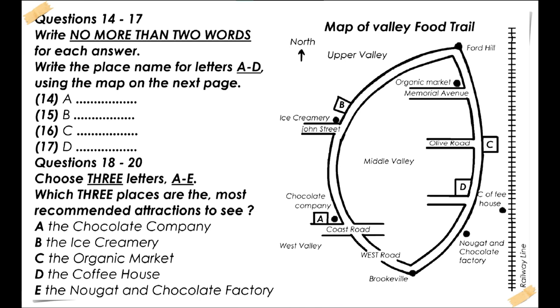Before the final part of the message, you now have twenty seconds to look at questions fourteen to twenty. Now answer questions fourteen to twenty. But let's go back to food. If we begin in Brookville and head north towards Upper Valley in a clockwise direction, passing West Valley on West Road, we cross over Coast Road to come to our first place of interest, Magic Coffee.